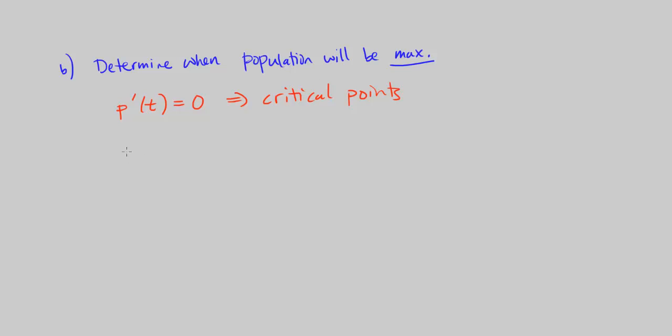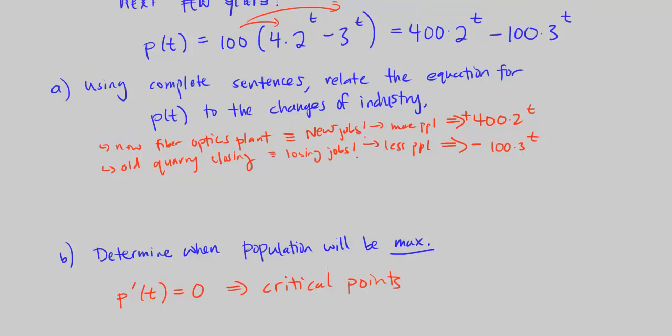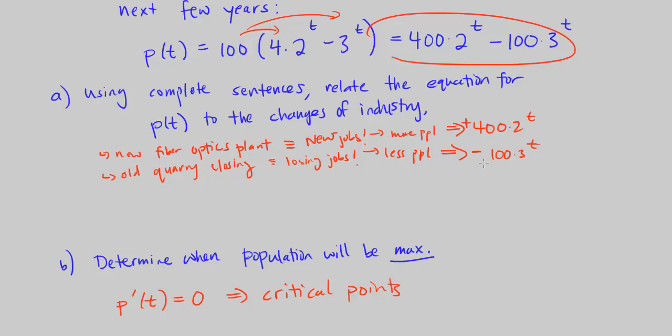So, what is p prime of t? Well, can we fit it? Yes, we can. So let's go ahead and start here. Well, the derivative then, p prime of t is equal to 400 times 2 to the t times ln of 2, that's the first part, minus 100 times 3 to the t times ln of 3.